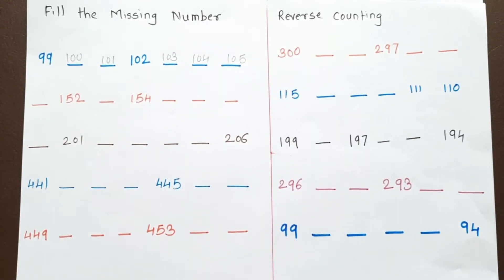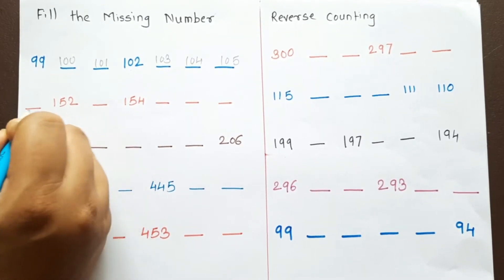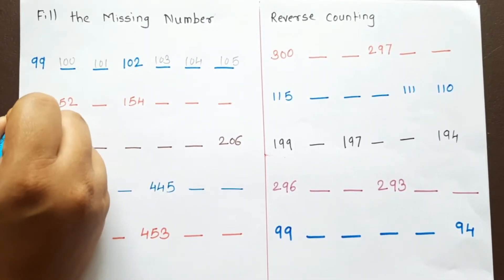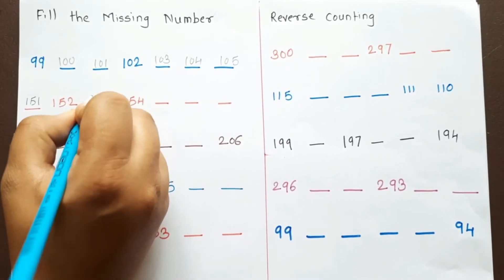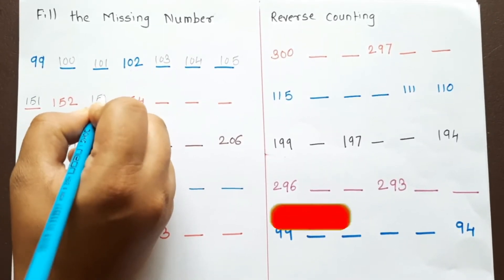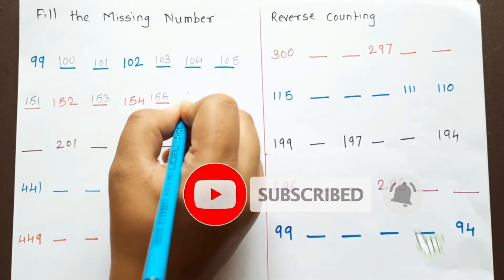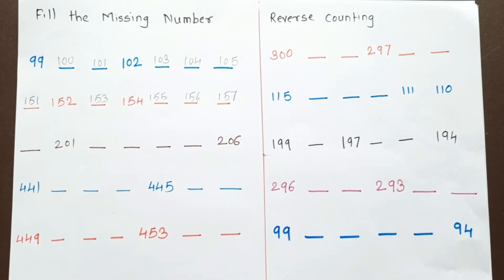Now we are going to fill the missing number. We are going to start from the number 151: 151, 152, 153, 154, 155, 156, 157.